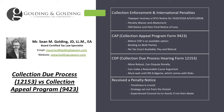Now, while both the collection appeal program and collection due process are used to halt collections or stop or overrule it, there are some considerations to take in. The collection appeal program form will come first — the 9423 is your first opportunity — but if you do that, then you cannot go to tax court afterwards on the same issue.